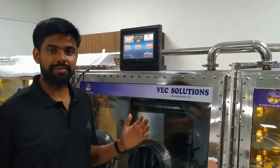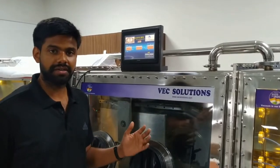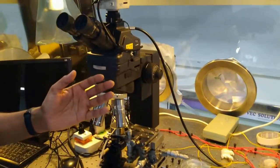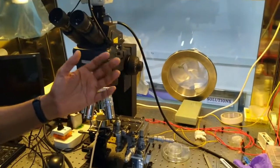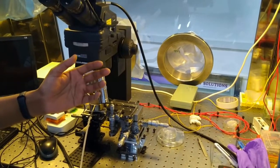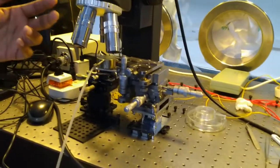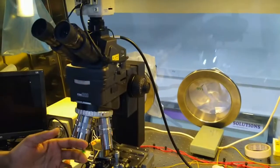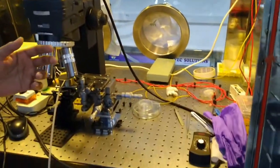This is the glove box which is used for making and processing our devices in inert conditions. In the left-most part is the chamber having a stamping stage for making heterostructures of 2D materials. Highly controlled and precise heterostructures can be made using the customized stage assembly and high magnification microscope. This is all mounted on an optical bench for possible further upgrades.